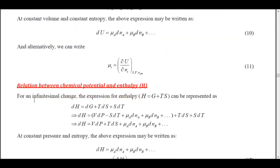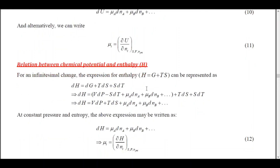Now let us look into the relationship between chemical potential and enthalpy. We start with H = G + TS. If I take the differential, I get dH = dG + TdS + SdT. Then I substitute the expression for dG.